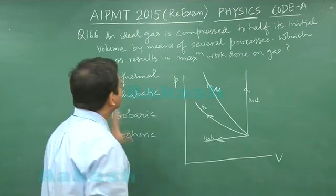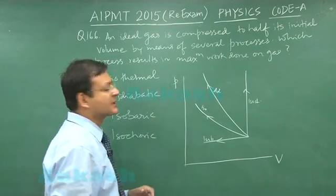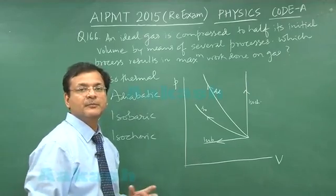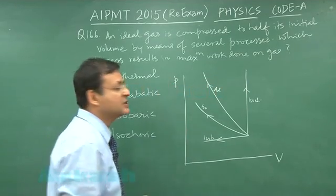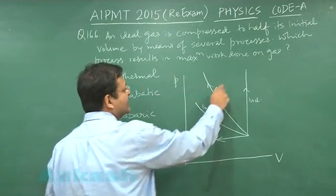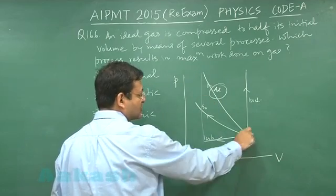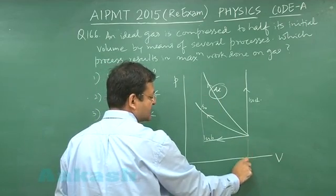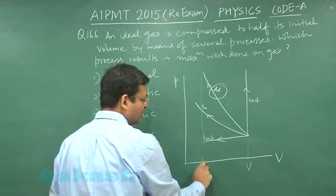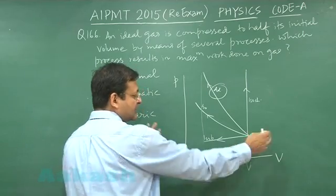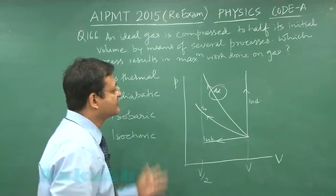Now they are asking for the maximum work done. Maximum work done means the maximum area. The maximum area is only under this curve because the initial point is fixed — the gas is being compressed to half of its volume, V/2.